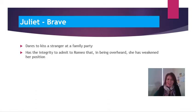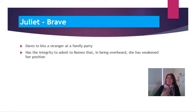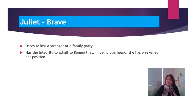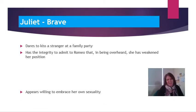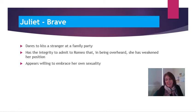I think Juliet is brave because she has the integrity to admit to Romeo when he overhears her in Act 2 Scene 1, where she has that quite long soliloquy giving voice to her innermost feelings — the diary entry scene where she is speaking to the audience as if no one is going to overhear. She is of course overheard by Romeo, and she admits that this has weakened her position.